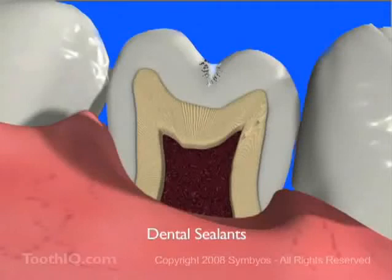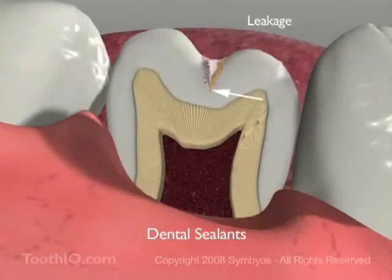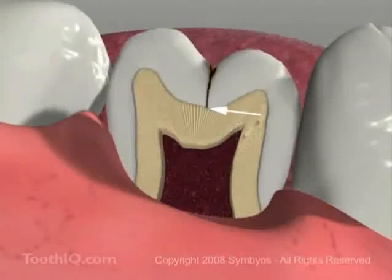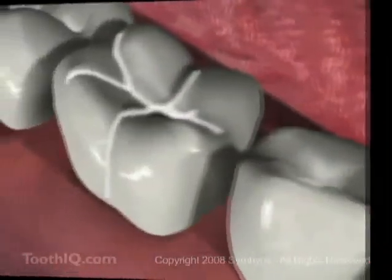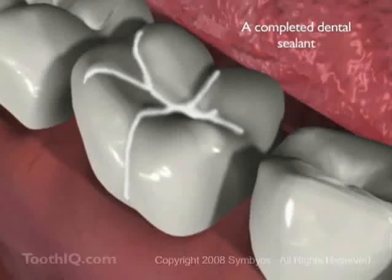But sealants do have some potential downsides. It is possible for microleakage to occur along the sealant, especially if moisture is present when the sealant is placed. If leakage does occur, it may be difficult to detect until a large cavity develops beneath the sealant. It is important to remember that sealed teeth are not completely resistant to tooth decay. It is a big mistake to relax nutrition and oral hygiene standards on the belief that sealants alone will prevent cavities.